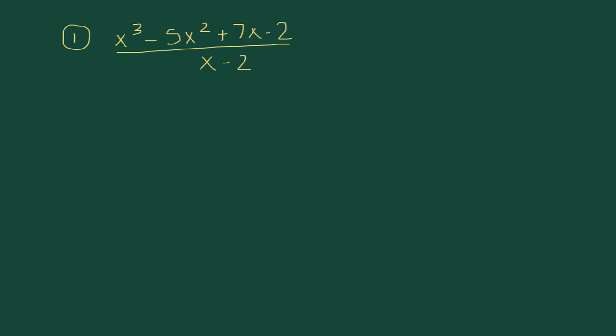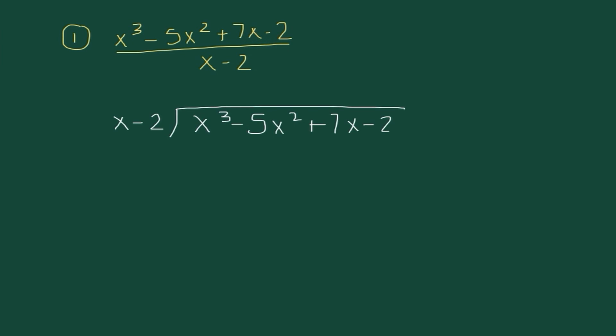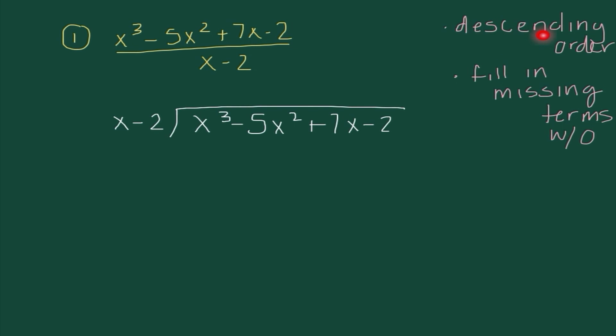None of your homework is actually going to look like that — that would be way too easy. So what we're going to be dealing with is using the same method, but with polynomials. When I set up our division problem, there are two things I really want to look for: I want to make sure that our polynomials are in descending order, and that we fill in any missing terms with a zero, which we have done here.